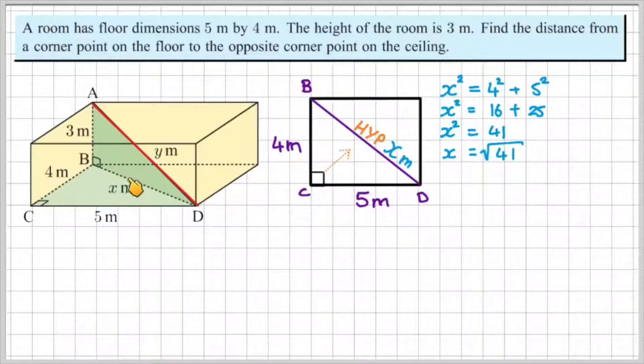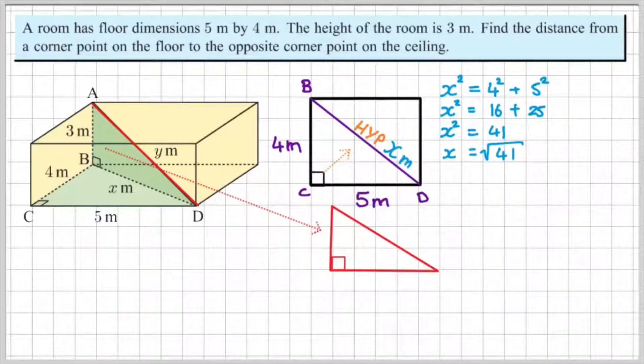So what we've done so far is we've worked out the length BD. Okay, and I've labeled that x. So we've worked out BD, and now we can use that information to set up a second triangle. Again, I know that this is a right angle, so I'm going to be using Pythagoras to solve this.